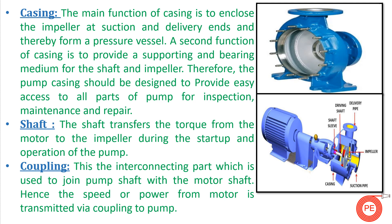The next part is the shaft. As the name suggests, the shaft transfers torque from the motor to the impeller during startup and operation of the pump. The shaft is the rotating part which connects the pump motor with the impeller — essentially a horizontal rod that connects your motor with your pump.